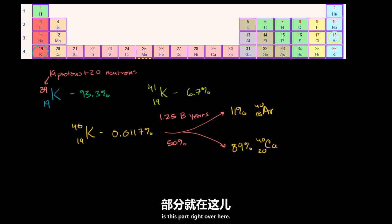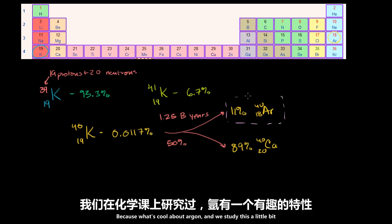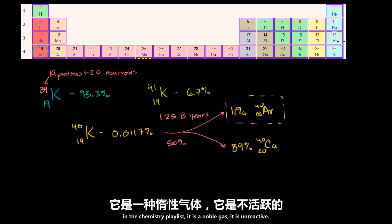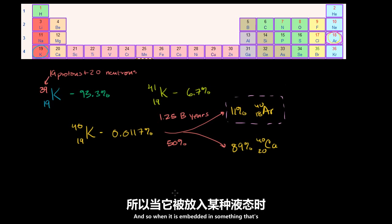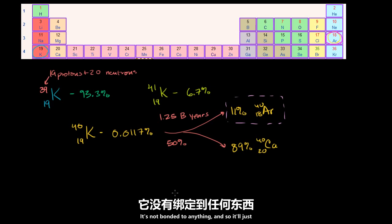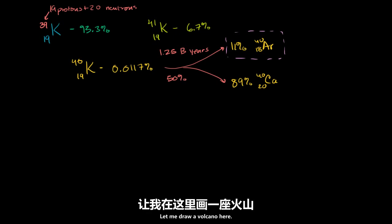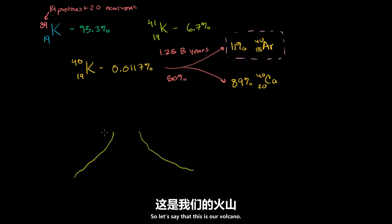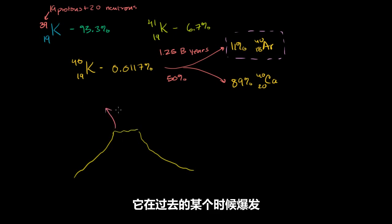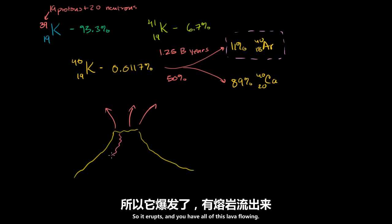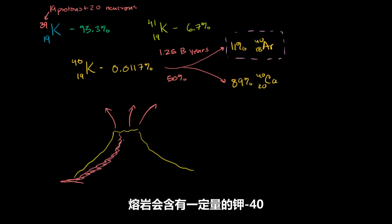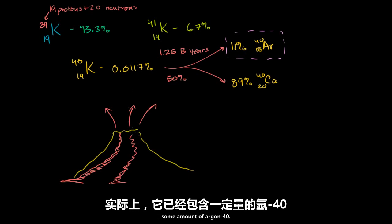What's really interesting to us is the argon-40 part. Because argon is a noble gas — it is unreactive. And so when it is embedded in something that's in a liquid state, it'll just bubble out. It's not bonded to anything, so it'll just go out into the atmosphere. You can imagine what happens during a volcanic eruption: the lava will contain some amount of potassium-40, and it might already contain some argon-40.